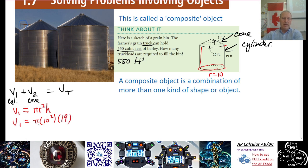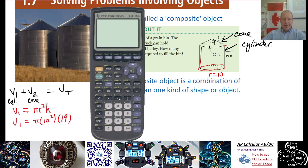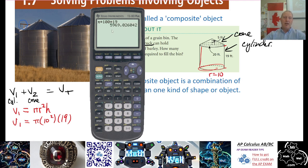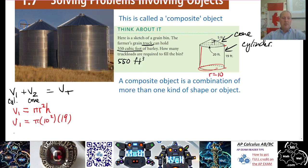So that's pi times 100 times 19. Let's get the calculator out. We'll do pi times 100 times 19, and that's 5969.026. We'll keep some decimal places and round at the very end. So Volume 1 is 5969.026 cubic feet — that's what fits inside the cylinder when it's completely full.